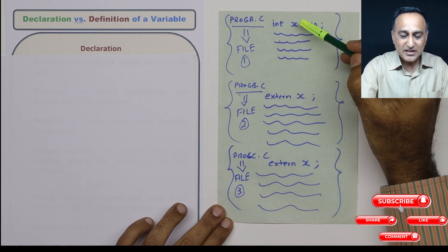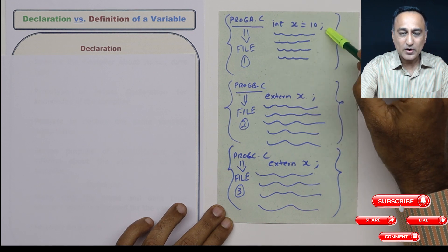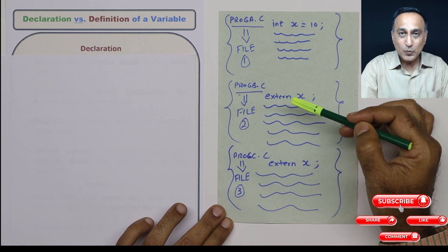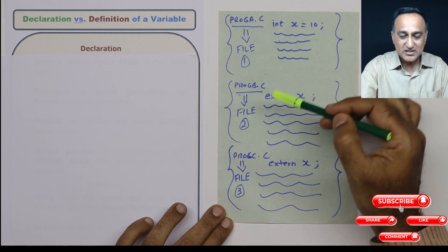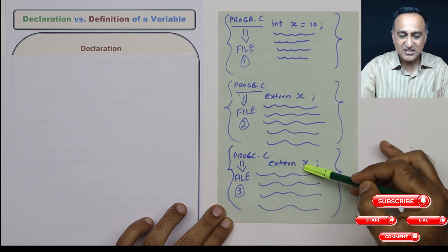So what we do is we do int x is assigned the value 10 just once, and everywhere where we are going to use this x like in file two and file three, I will just say extern x, extern x.